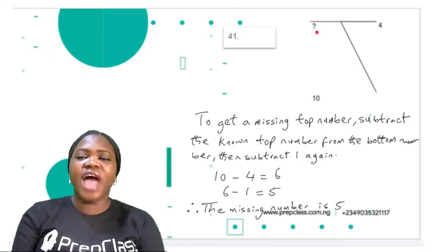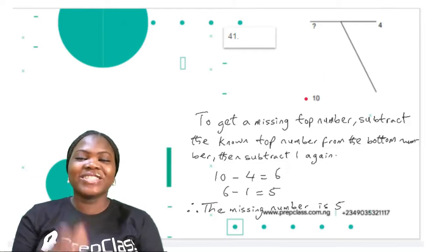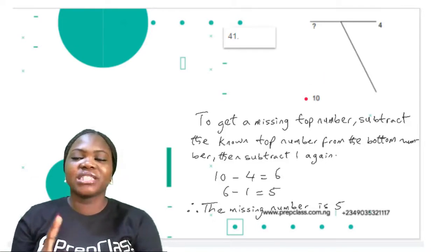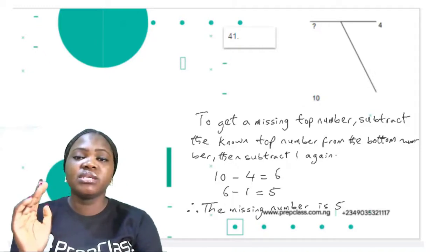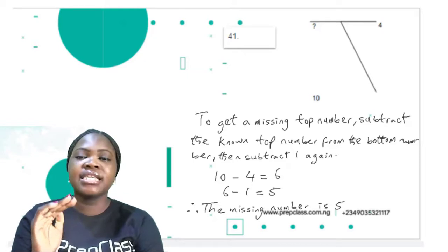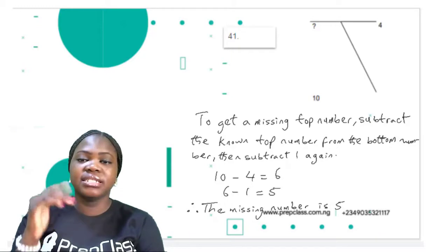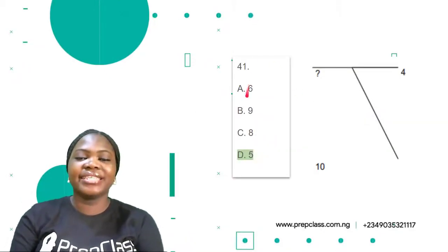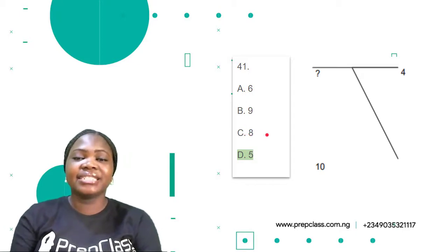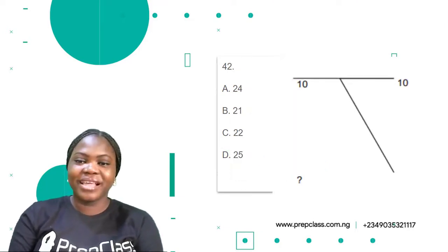Let's verify: 5 plus 4 is 9, and 9 plus 1 is 10 — correct! The missing number is 5. Whenever you get questions like this with a missing top number, check by working back to get the bottom number from your answer. The options are A: 6, B: 9, C: 8, D: 5. The correct option is D — 5.